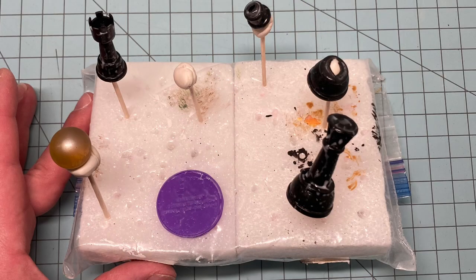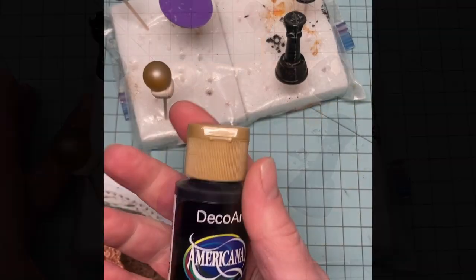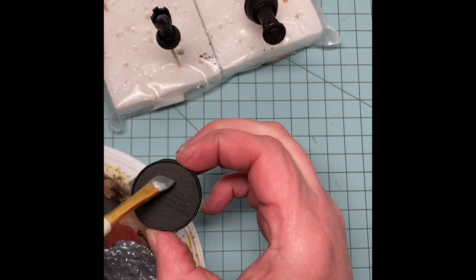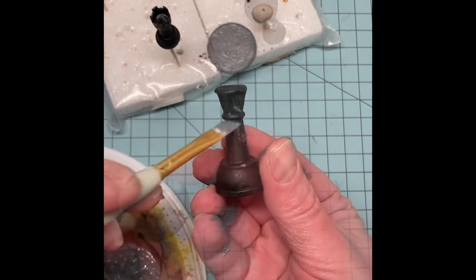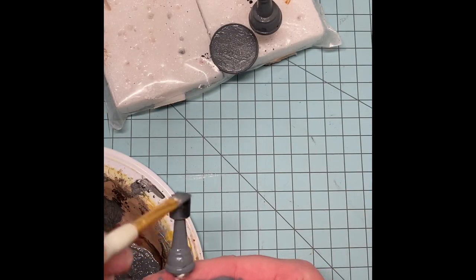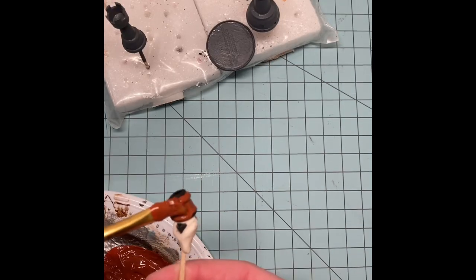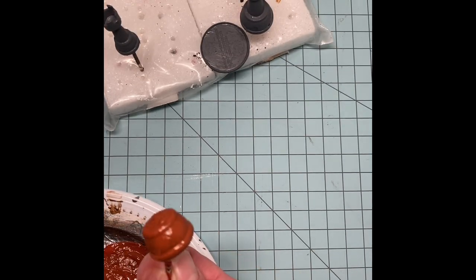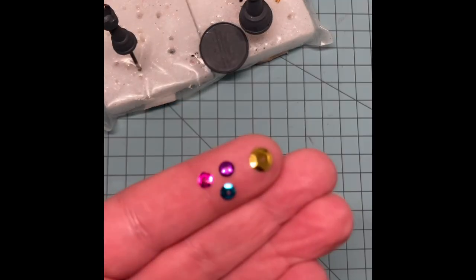After the second coat of mod podge dried, I used black acrylic paint to give the rook, king, marble, and plate a base coat and let them dry. Then I painted them gray and painted the two offcuts from the queen in a terracotta colored acrylic paint. Then I let everything dry again before moving on.